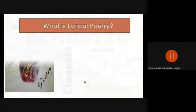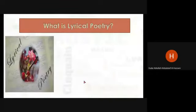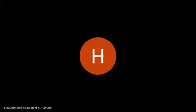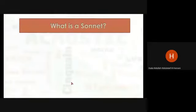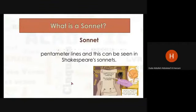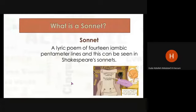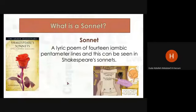The third main type is lyrical poetry. Lyrical poetry has the form and musical quality of a song, by which the poet expresses personal feelings and experiences, such as the sonnet and ode. We have two types of lyrical poetry. A sonnet is a lyric poem of 14 iambic pentameter lines, as seen in Shakespeare's sonnets. Later, we will learn what an iambic pentameter line is.